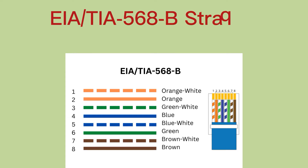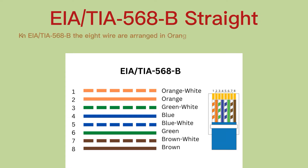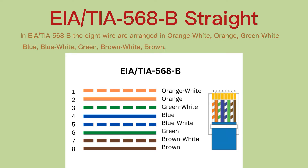EIA/TIA 568B straight. In EIA/TIA 568B, the eight wires are arranged in the following order: white-orange, orange, white-green, blue, white-blue, green, white-brown, brown.